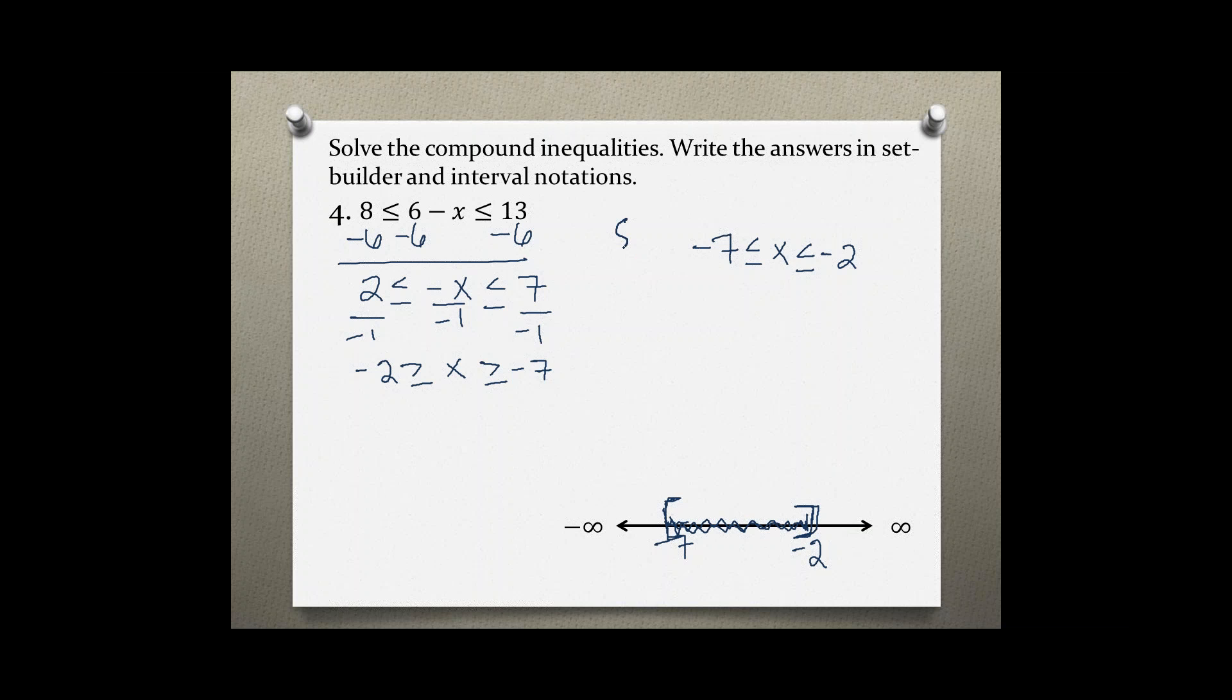So in set builder notation, the set of all x such that negative 7 is less than or equal to x and less than or equal to negative 2.